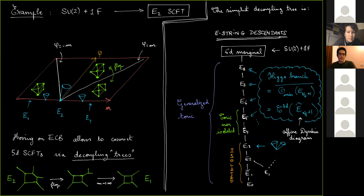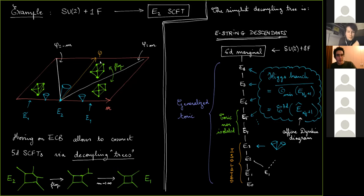With these theories, the toric diagram offers a nice way of parametrizing how you move on the Coulomb branch, and therefore how to characterize the Higgs branch at a given point. I illustrate with a very simple theory — the SCFT obtained from an SU(2) theory with one fundamental. Different sections of the extended Coulomb branch are labeled by resolutions of the toric diagrams, and different phases are connected by flops. In each part, you can compute what the Higgs branch is.